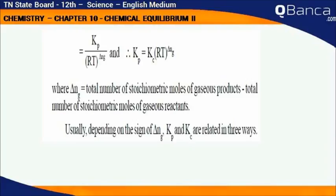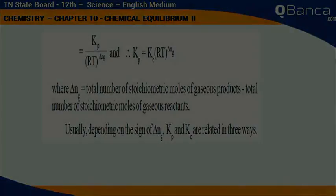Usually, depending on the sign of delta Ng, Kp and Kc are related in three ways.